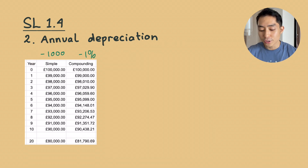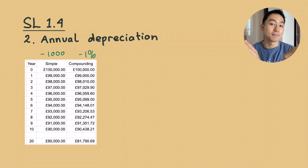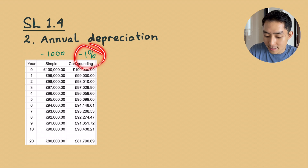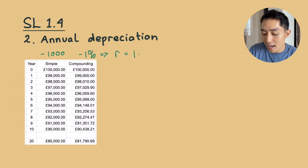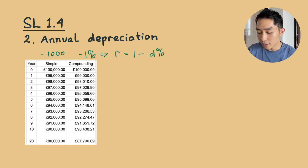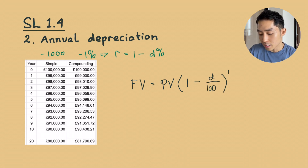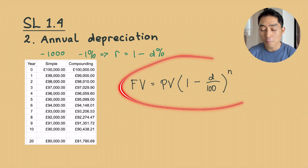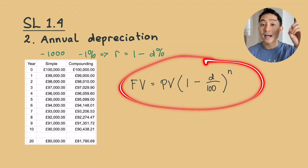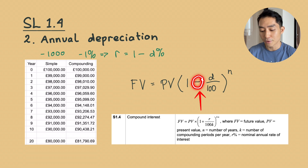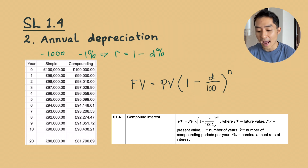On the exam, you will only be tested on annual depreciation — never monthly, quarterly, or semesterly. A decrease of 1% implies the ratio we keep is 100% minus the depreciation rate. So the future value from annual depreciation equals the present value multiplied by (1 minus the depreciation rate over 100) raised to the power of the number of years. There is no k in this formula because k always equals 1 for annual. This formula is not in your formula book, but you can derive it from the compound interest formula by changing the plus to minus and removing k.